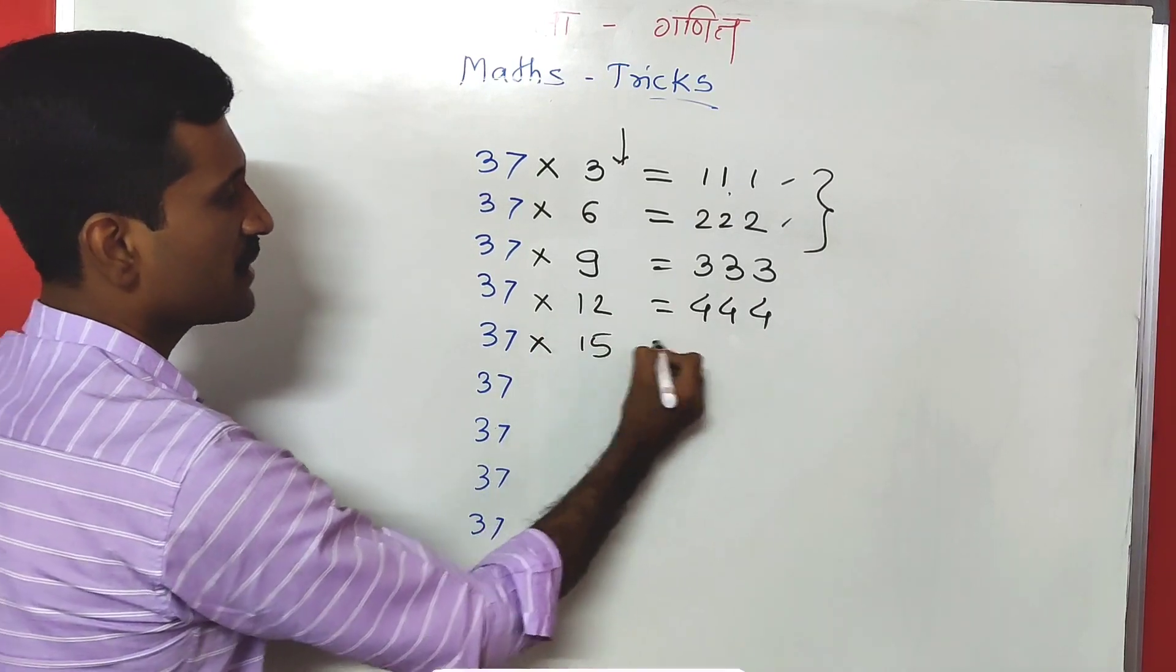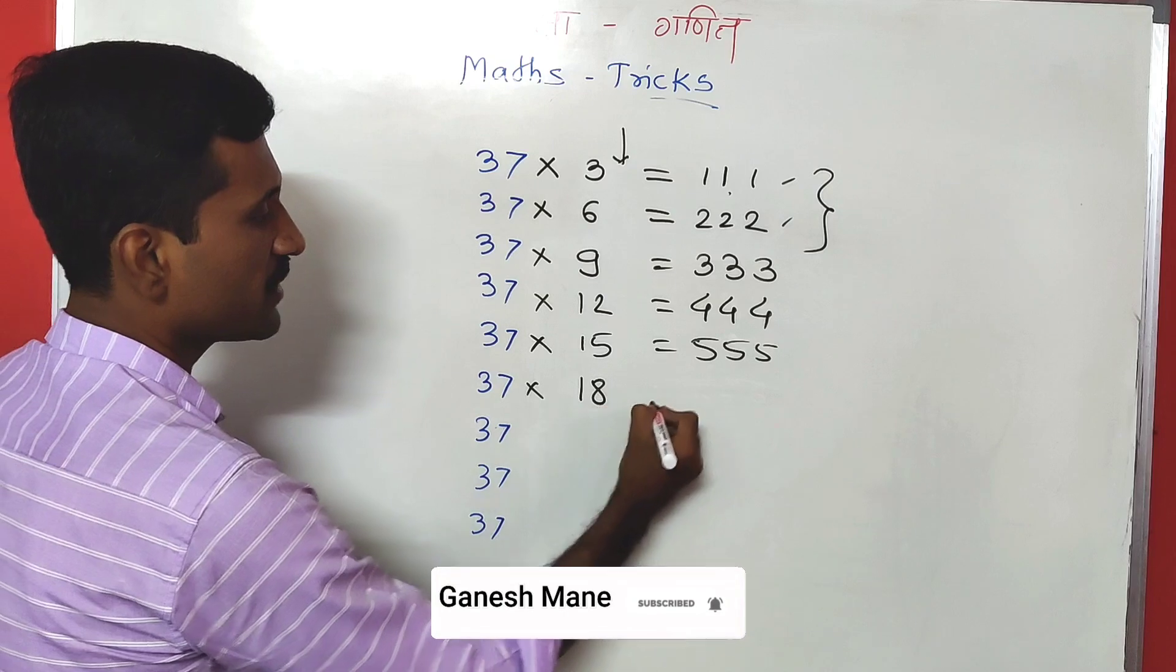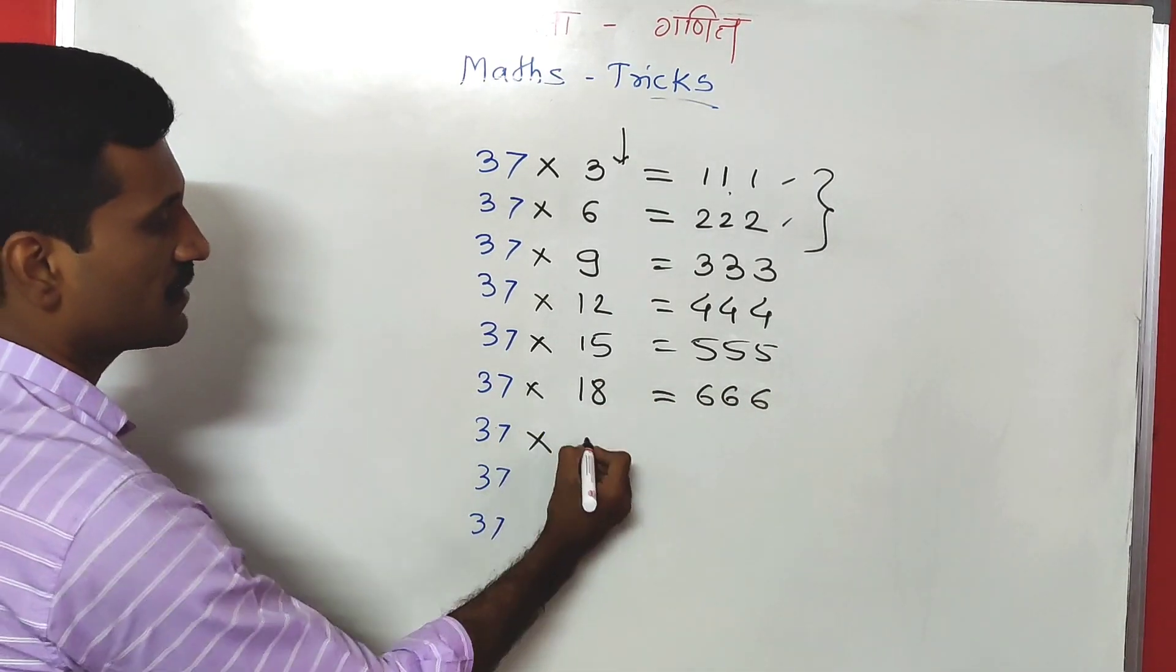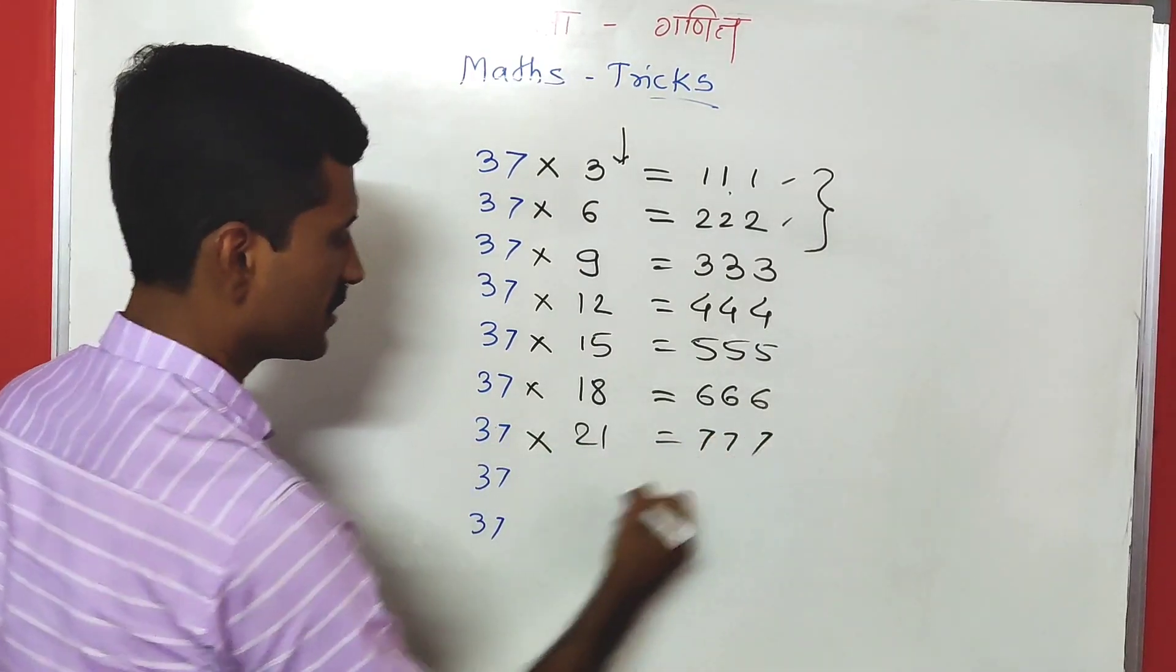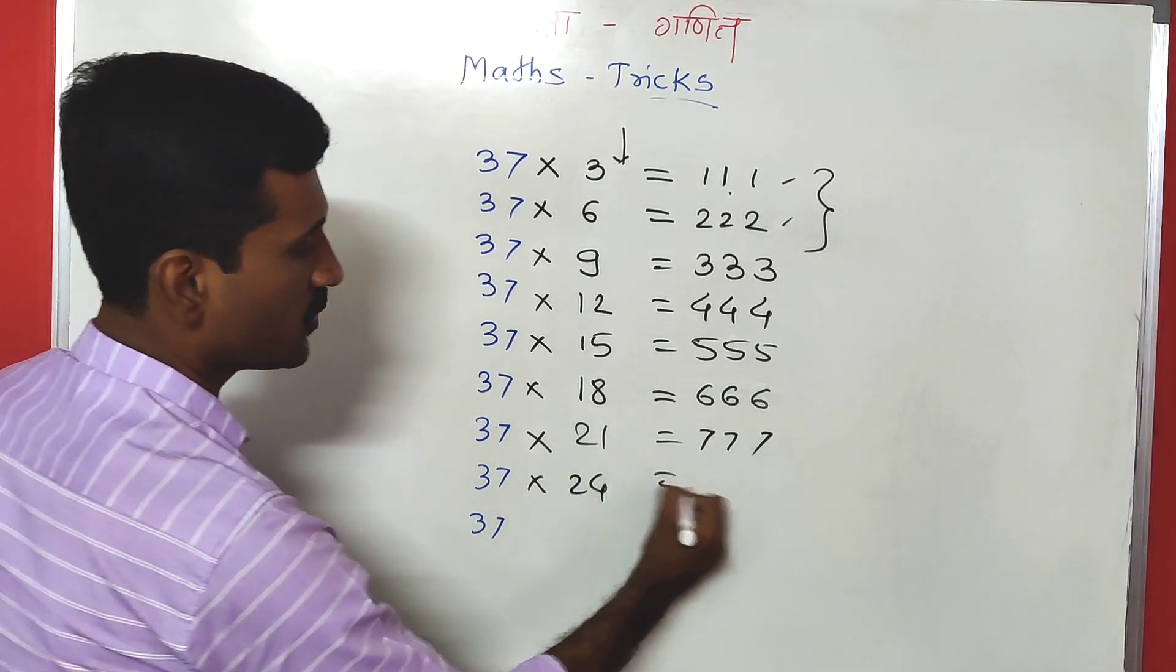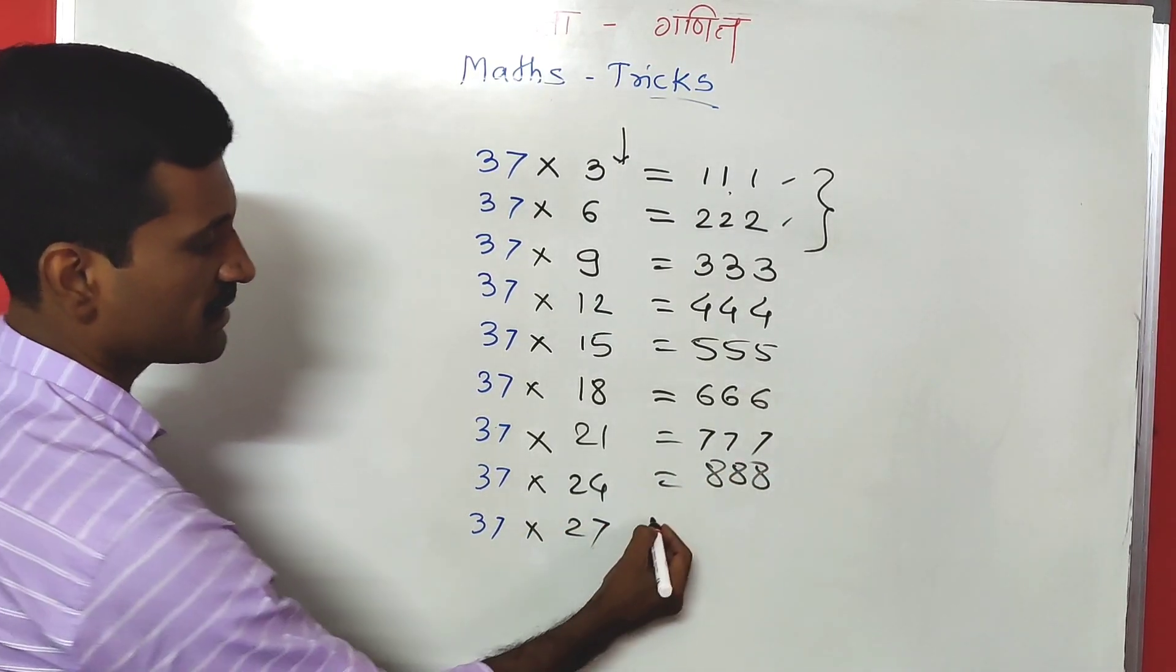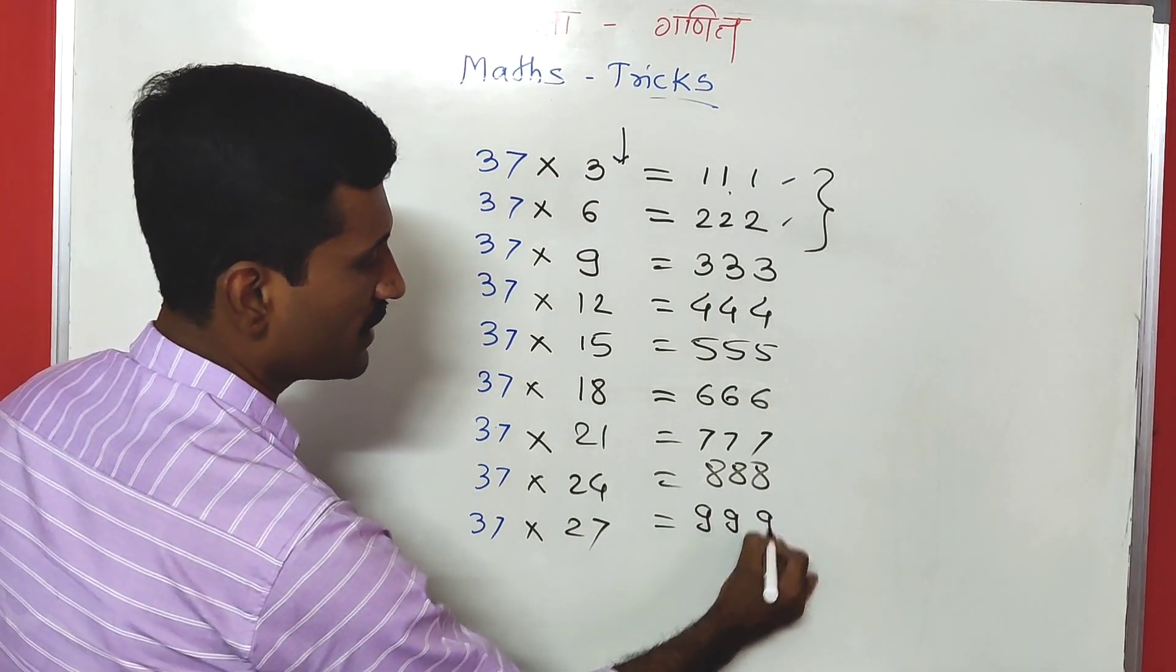37 times 15 is 555. 37 times 18 is 666. 37 times 21 is 777. 37 times 24 is 888. 37 times 27 is 999.